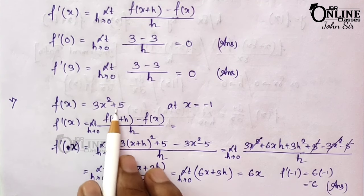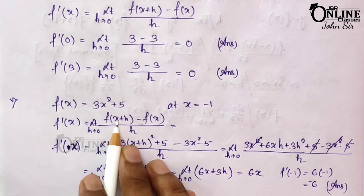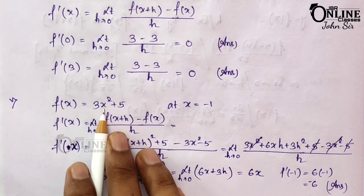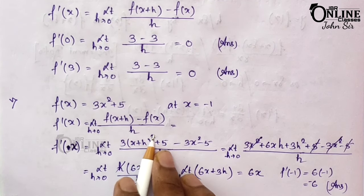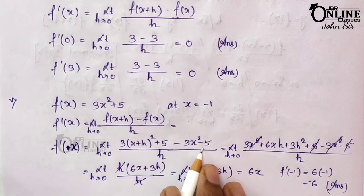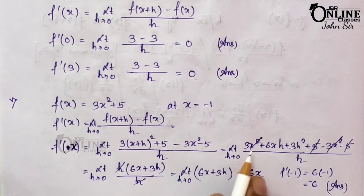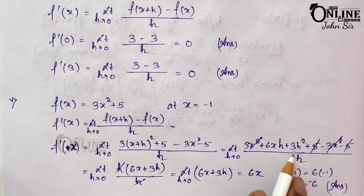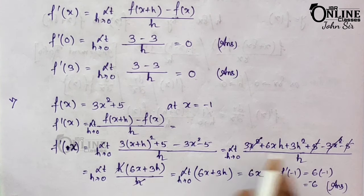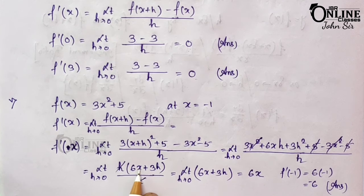Fifth: f(x) = 3x² + 5 at x = -1. So f'(x) = limit h→0 of [f(x+h) - f(x)] / h. Here f(x+h) means instead of x write x+h, so it becomes 3(x+h)² + 5, then minus 3x² + 5 divided by h. Now apply the formula (a+b)² and multiply with 3: it becomes 3x² + 6xh + 3h² + 5 minus 3x² minus 5, divided by h.